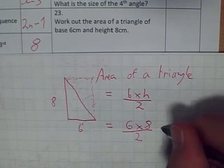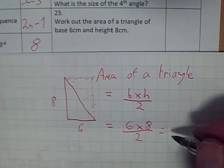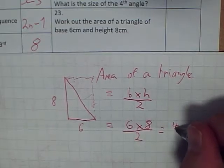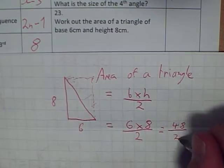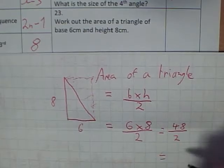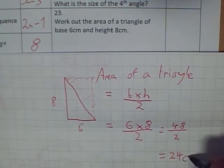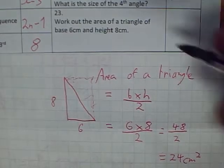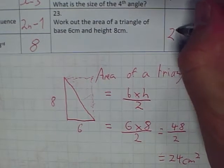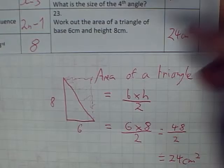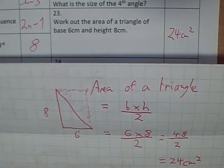Which in this case, so 6 times 8 is 48. 48 divided by 2 equals 24. Now what are we talking about? Centimeters and its area, so centimeters squared. 24 centimeters squared.